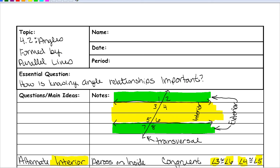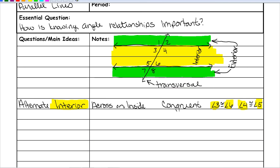The next set of angles are called alternate exterior angles — across diagonally on the outside. They are also congruent. Examples are angles 1 and 8, and angles 2 and 7, which are across diagonally on the outside. All of these angles are on the exterior, so they will all be green angles.